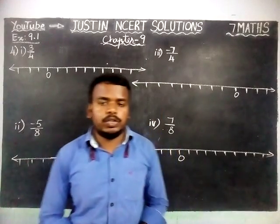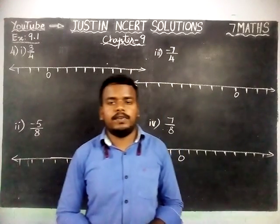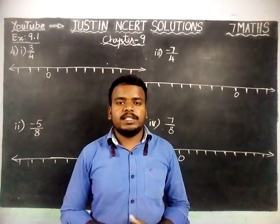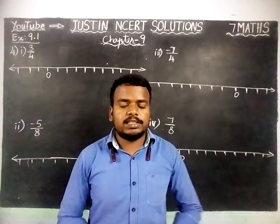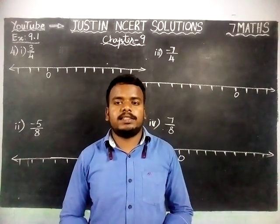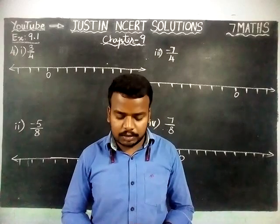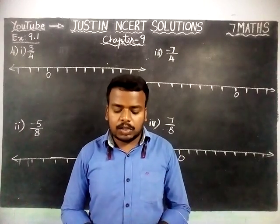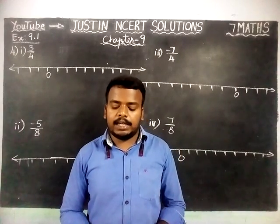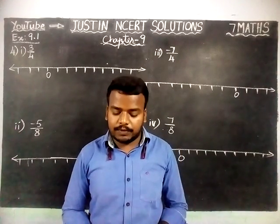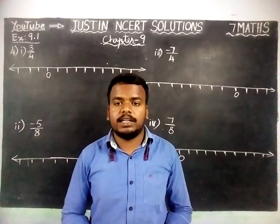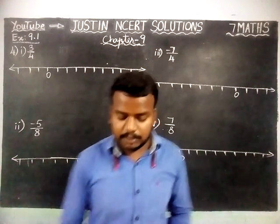Friends, welcome to Justinian NCRT Solutions. In this video, we are going to see 7th standard math, chapter 9, exercise 9.1, 4th question. Draw the number line and represent the following rational numbers on it.